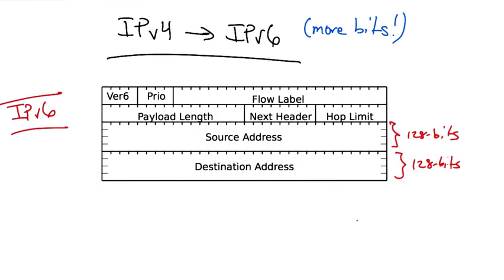By contrast, here's the IPv6 header. The IPv6 header provides 128 bits for both the source and destination IP addresses.